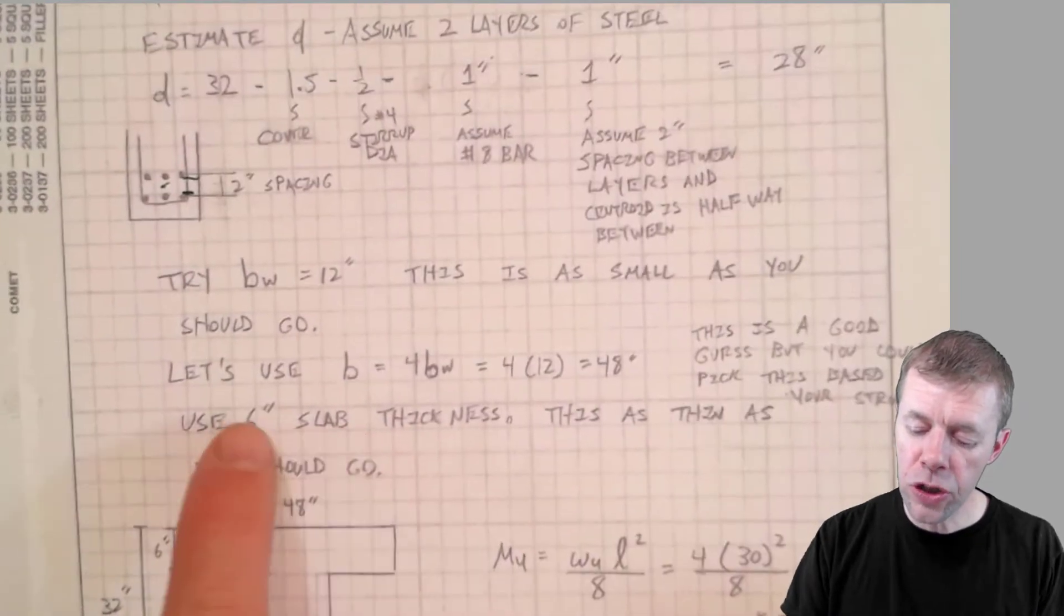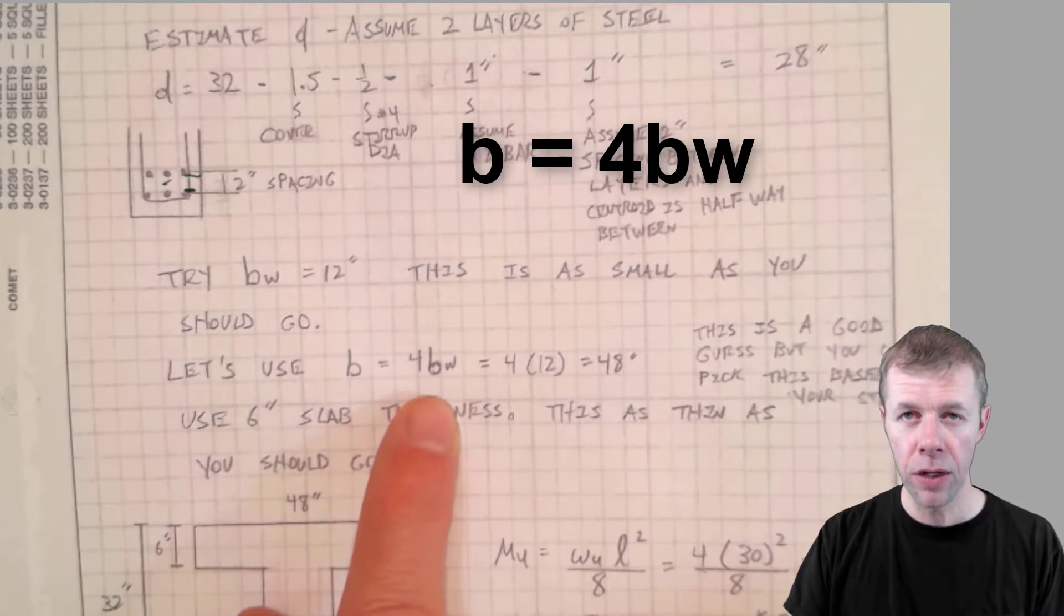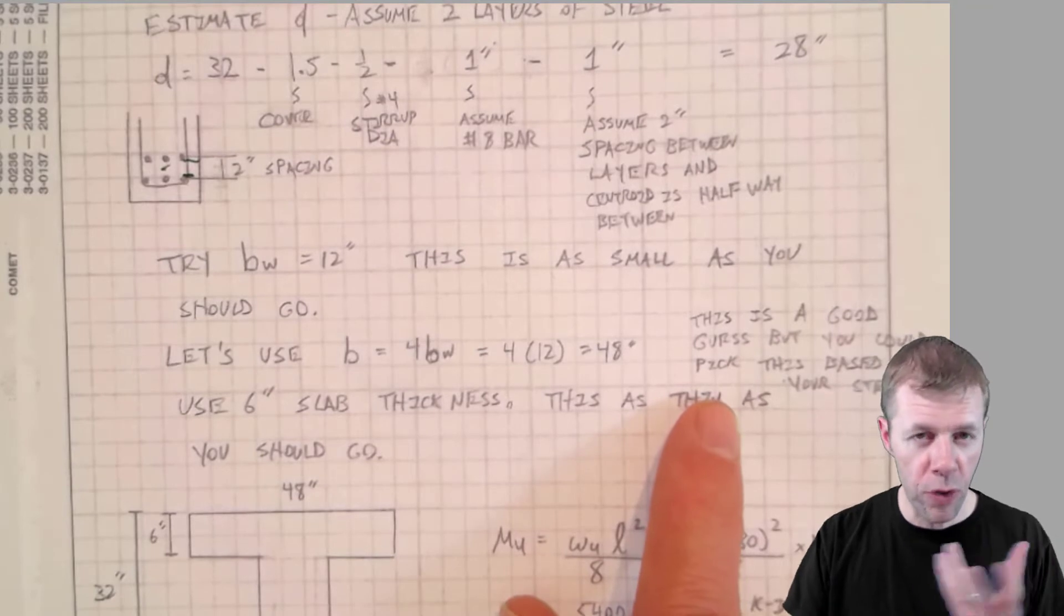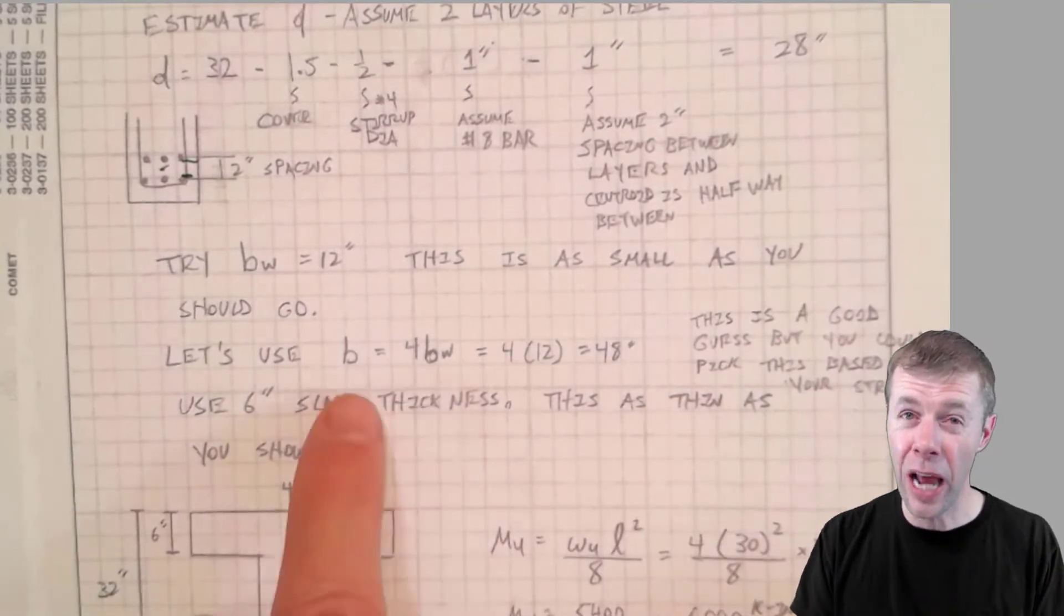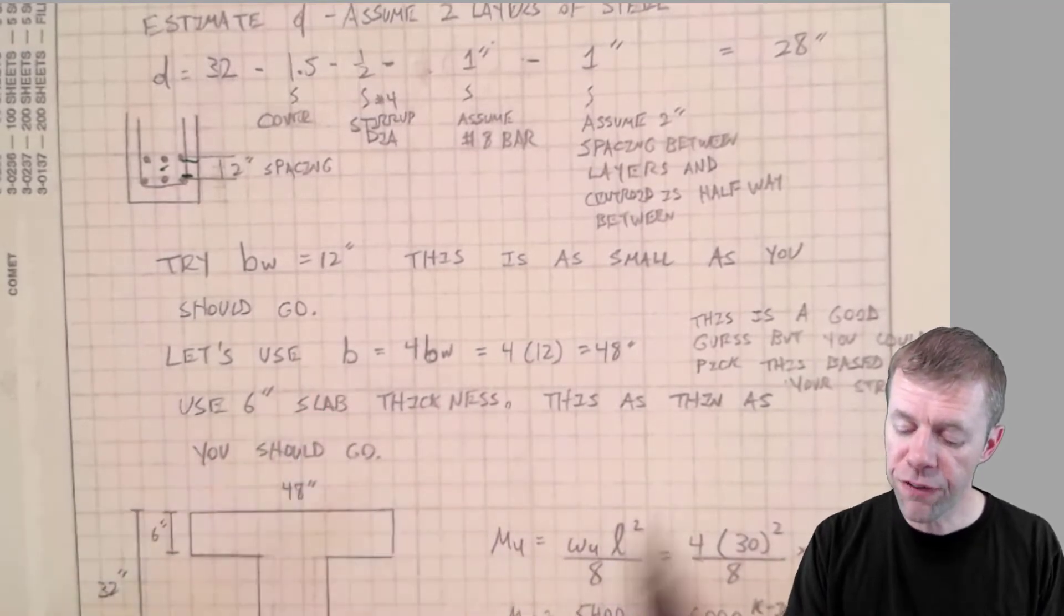So let's use a B that's equal to four times my BW. This is again just a good guess. You could pick based on your structure too if you have some other geometry. But four times your width is a pretty good estimate of usually what your total B is. So that's 48 inches.